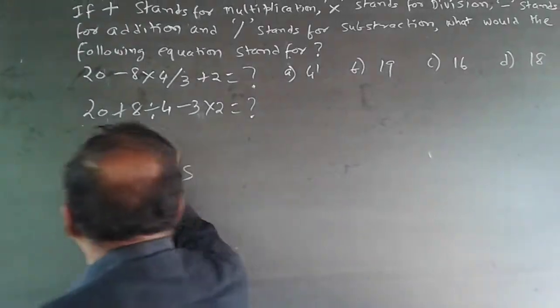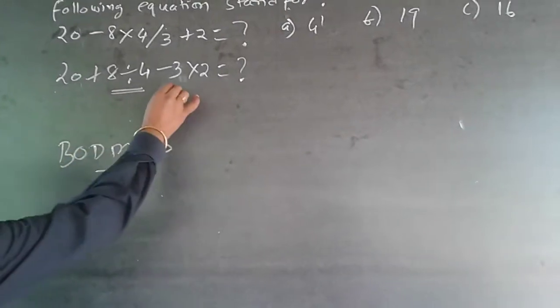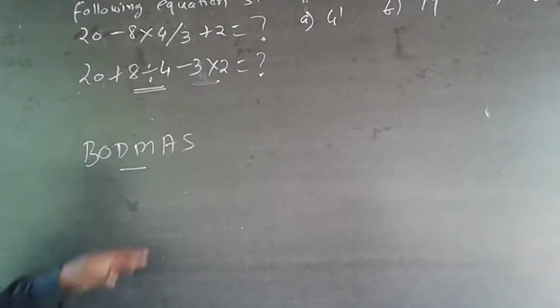Now, what happens is, here, this 8 divided by 4 will have a priority. This has to be done first. Similarly, 3 into 2 will have a priority. This has to be done first.